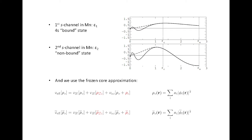The use of the frozen core approximation is also at the level of the PAW method. There's a whole bunch of electrons that are only present implicitly by their core charge density, which is added to all terms — the exchange-correlation terms and the Hartree term as well.